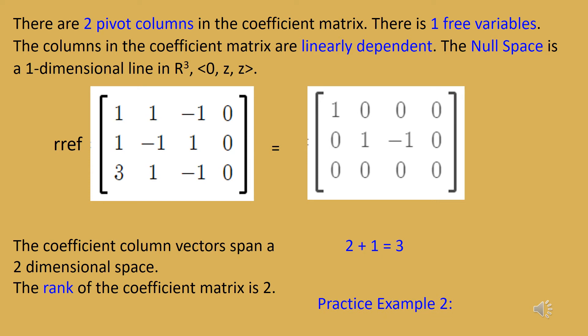It is important to note that no homogeneous system — a system where all equations are set equal to zero — will ever have the empty set as its solution set, because the zero vector is always a solution. In this case, besides the zero vector, every point on the line where x is zero and y and z are the same is a solution. A homogeneous system will never have the empty set as its solution set because the null space will always at least contain the zero vector.